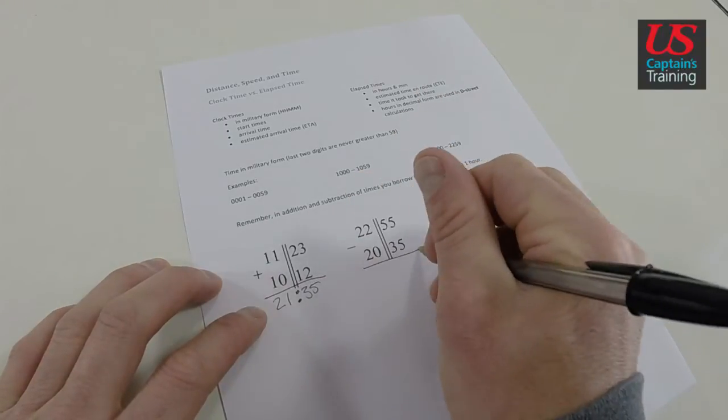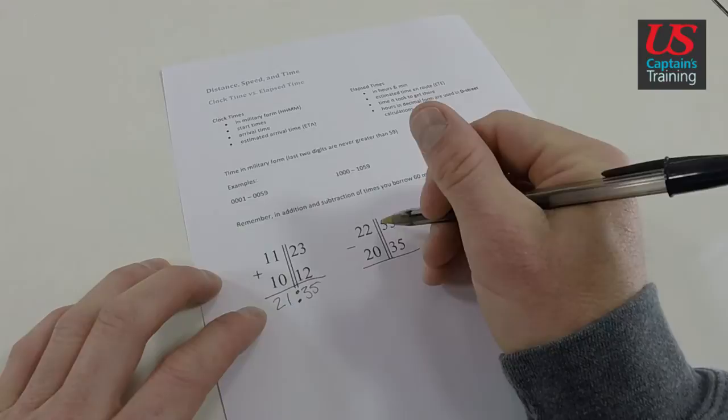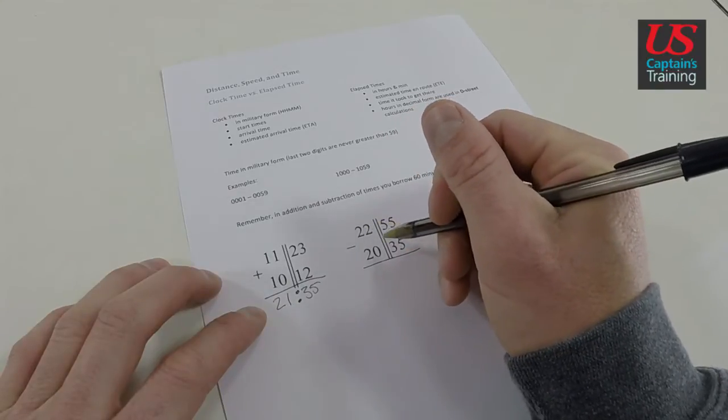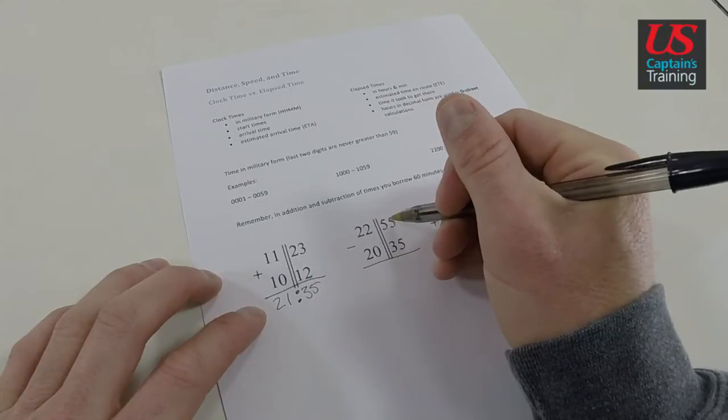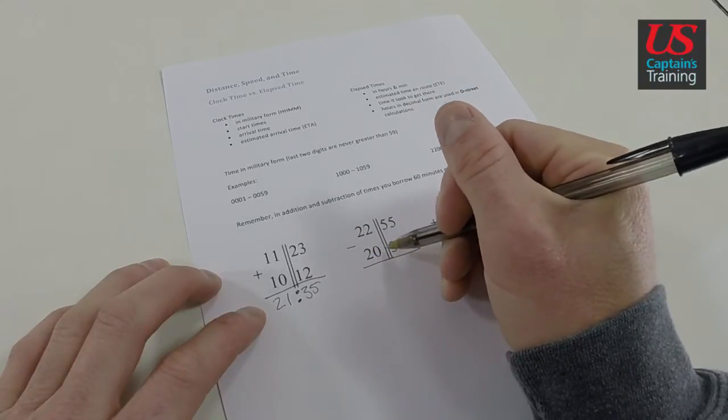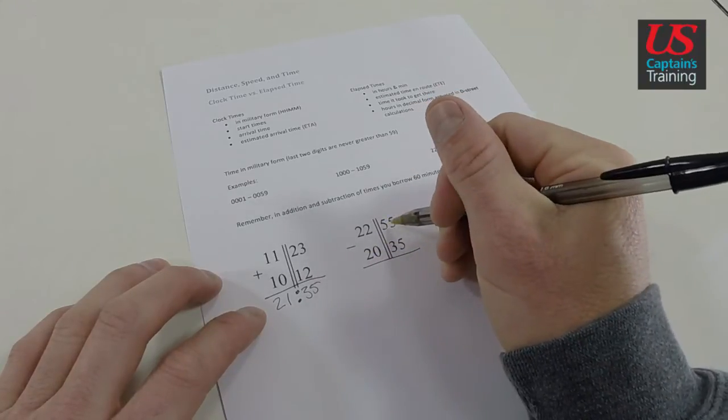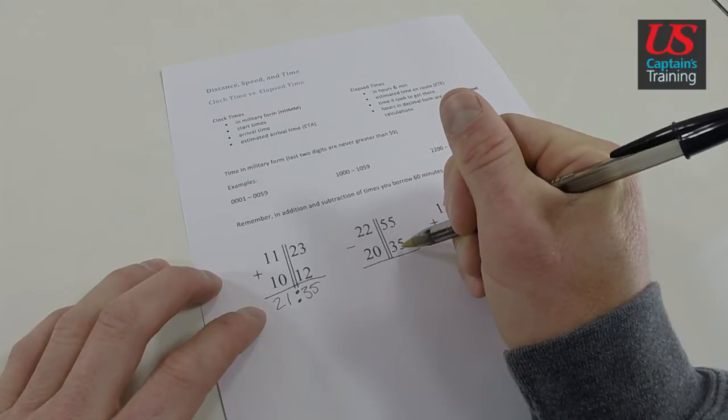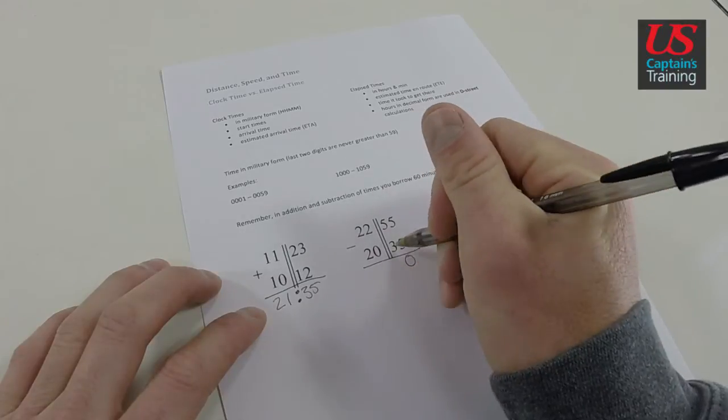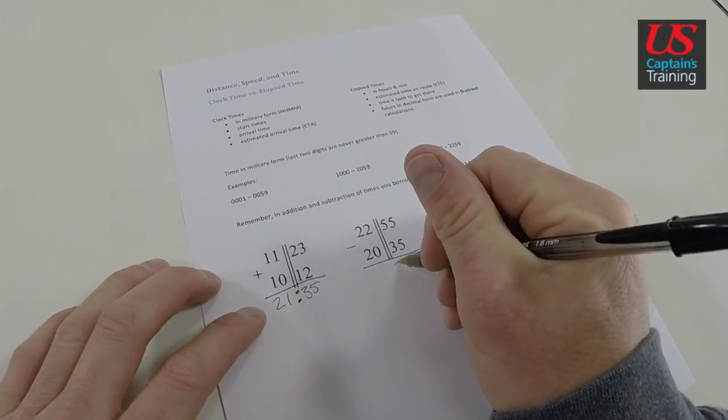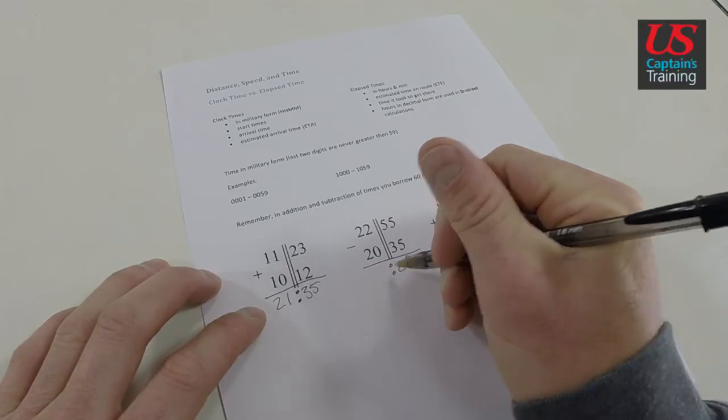The second one, a subtraction problem. We have 2255 minus 2035. And this is 22 hours, 55 minutes. 20 hours and 35 minutes. So 55 minutes minus 35 minutes. 5 minus 5 is 0. 5 minus 3 is 2. 20 minutes.